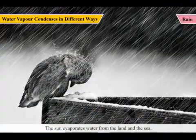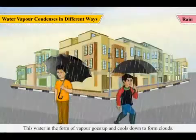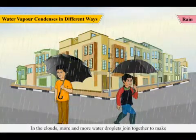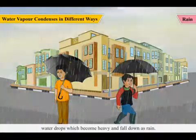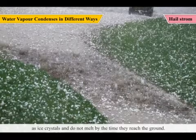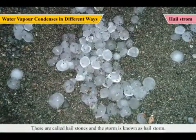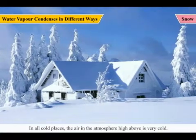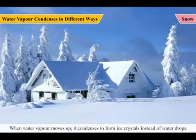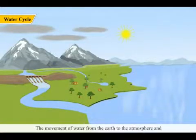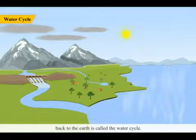Rain: the sun evaporates water from the land and the sea. This water in the form of vapor goes up and cools down to form clouds. In the clouds, more and more water droplets join together to make water drops, which become heavy and fall down as rain. During stormy weather, the bigger drops of water usually get frozen as ice crystals and do not melt by the time they reach the ground. These are called hailstones and the storm is known as hailstorm. Snow: in cold places, the air in the atmosphere high above is very cold. When water vapor moves up, it condenses to form ice crystals instead of water drops. These fall down as snow.